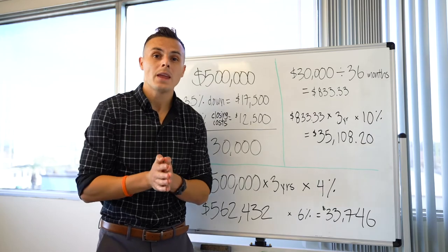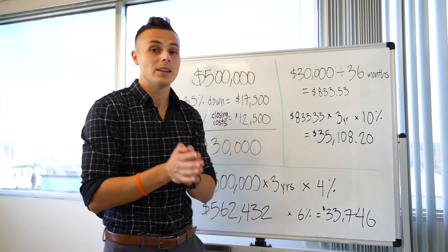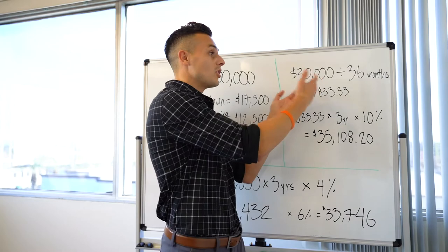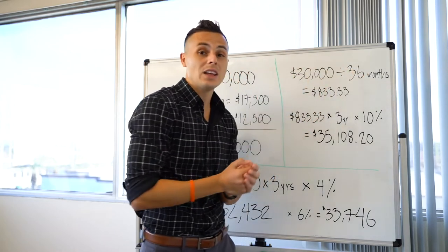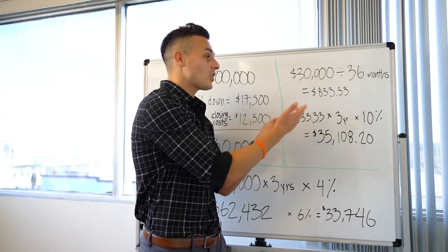So what I want you to do is to divide it by the amount of months. So we're looking at $30,000 divided by 36 months. That equals $833.33.